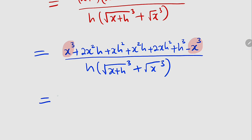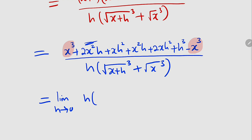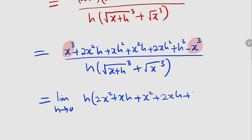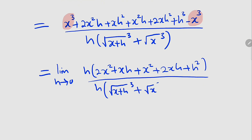Let me bring back my limit, h approaches 0. We can factor out h because all of these terms contain h. So we bring one h outside. From here we have 2x squared, then xh, then plus xh, then plus x squared, then plus 2xh, then plus h squared. You can clearly see that these two h's will cancel, and from here we can directly apply our limit.